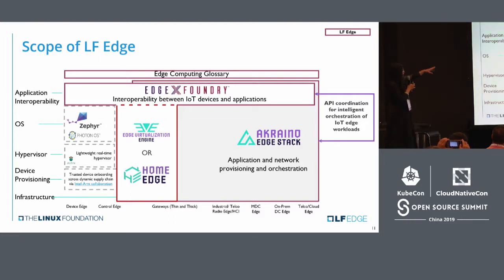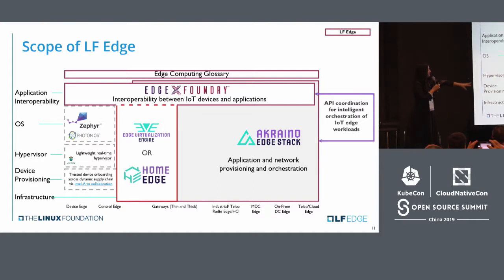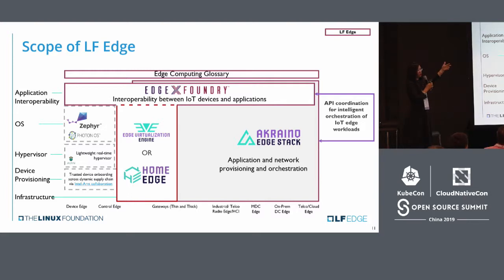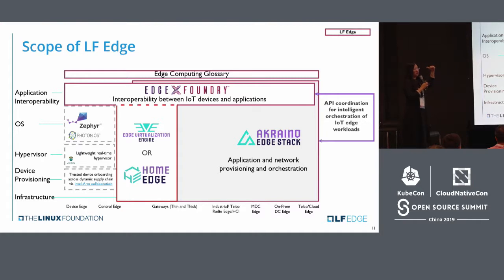Let's look at the scope of LF Edge. From the bottom up, at the bottom you have infrastructure. Then you have application interoperability, like E for Home Edge. Then you have Akrino Edge Stack, and then Akrino in the raft — it spans. Akrino will provide a portal to do some IoT services. On the top you will do some terminology. When you ask about what is edge computing or what is local service, people have different understandings, so we have this live glossary or unified terminology.